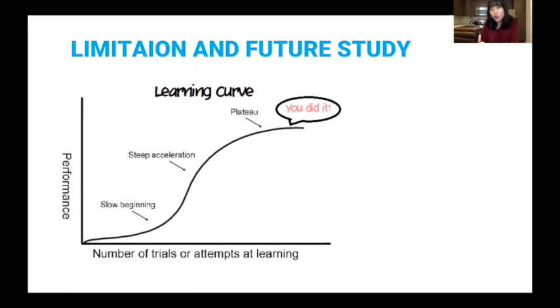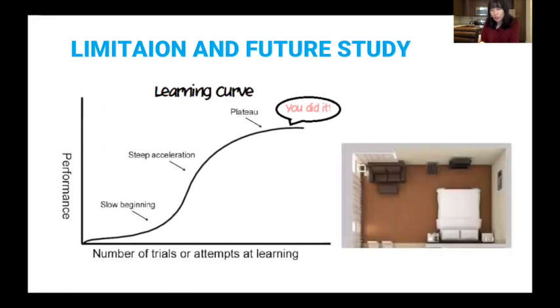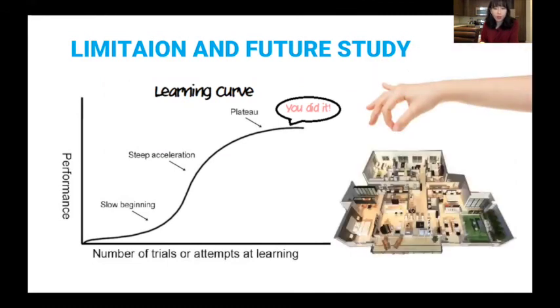It is also important to understand the limitations of the world-in-miniature interaction as well, because world-in-miniature interaction may not really work well for dense environments. In order to incorporate this world-in-miniature interaction into VR applications, we should consider other different interactions such as zoom in or zoom out, or using ray casting to enable users to select tiny objects in a dense environment as well. Future study could try to understand how we can better incorporate this world-in-miniature interaction into VR architecture or VR interior design applications.